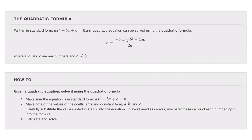Whenever we're solving a quadratic, we can always use either completing the square or the quadratic formula. Written in standard form, any quadratic equation can be solved using the quadratic formula, where a, b, and c are real numbers and a is not zero. One of my former students remembers this formula with a mnemonic: 'The negative boy couldn't decide to go to the radical house because he was square, so he missed out on four awesome chicks, and it was all over by 2 AM.'